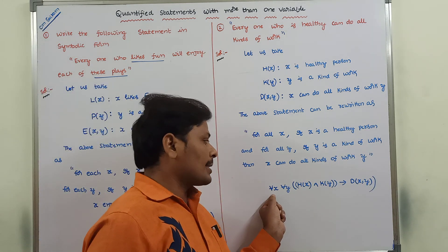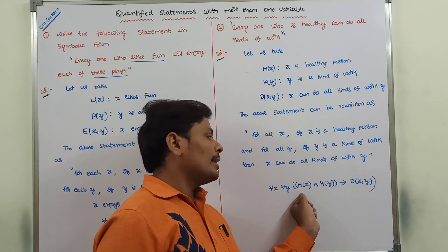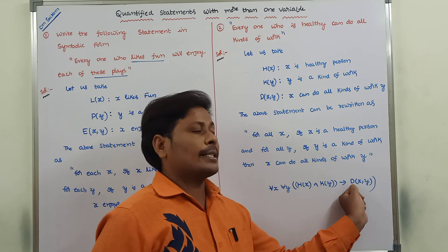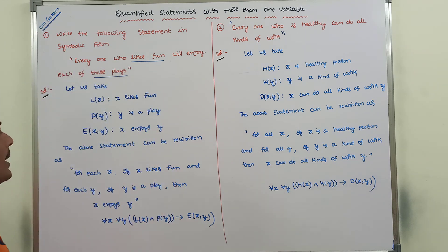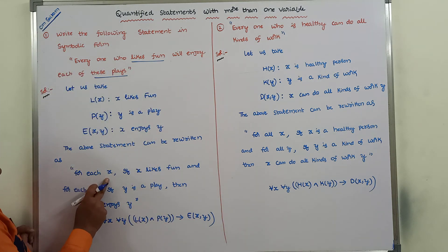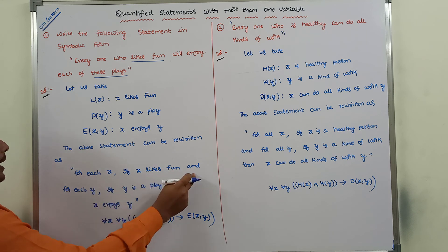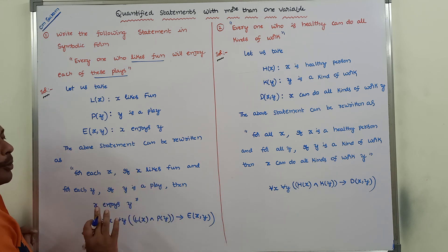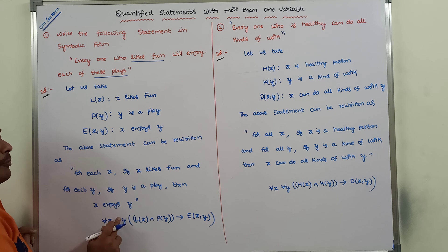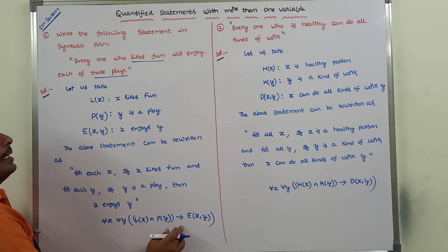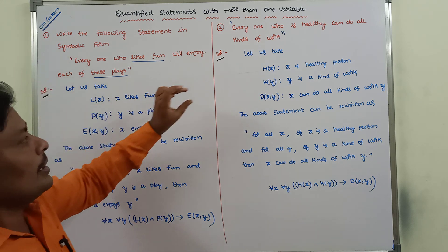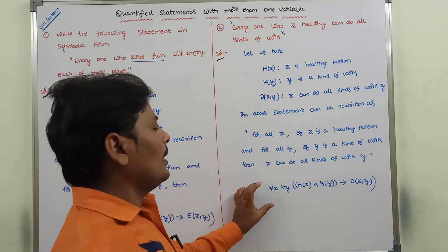Both examples follow the same structure: for each x, if x satisfies some property, and for each y, if y satisfies another property, then some relation holds between x and y. This is the symbolic representation for both statements. Both are approximately the same in logical structure.